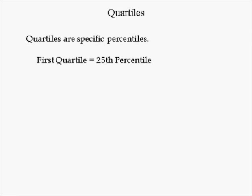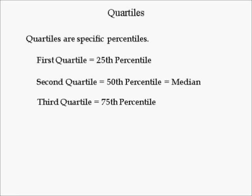Like the median — which is the 50th percentile — the quartiles of a data set are special percentiles. The first quartile is the 25th percentile, or the median of the lower half of the data. The second quartile is the 50th percentile, or the median of the data. The third quartile is the 75th percentile, or the median of the upper half of the data. The three quartiles split the data into four quarters.